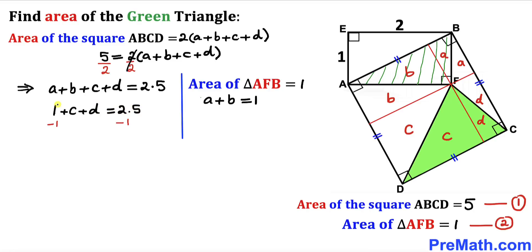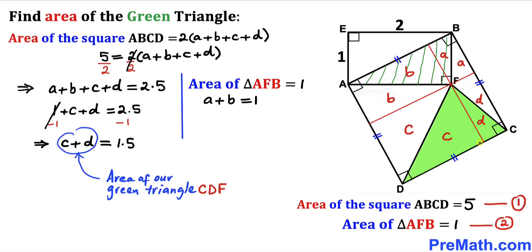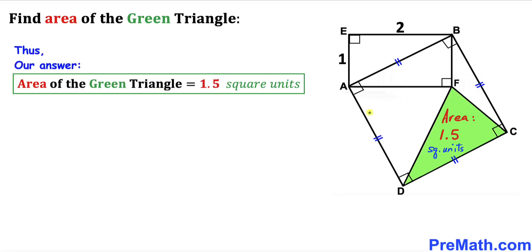Subtracting 1 from both sides, we get C + D = 1.5. We can see that C + D is actually the area of the green shaded triangle. So the area of this green shaded triangle turns out to be 1.5 square units — and that's our final answer.